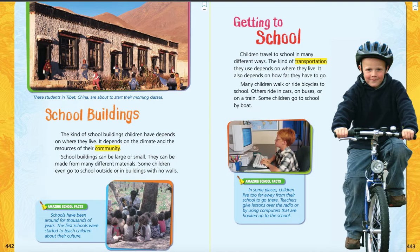School buildings can be large or small. They can be made from many different materials. Some children even go to school outside or in buildings with no walls. That would be nice if you lived in a warm area to go outside to school or in a building with no walls — but not where we live in the winter. Here's another amazing school fact: schools have been around for thousands of years. The first schools were started to teach children about their culture. When schools were first started, kids didn't learn reading and writing and math and science — they only learned about their culture, different ways that their group of people lived.